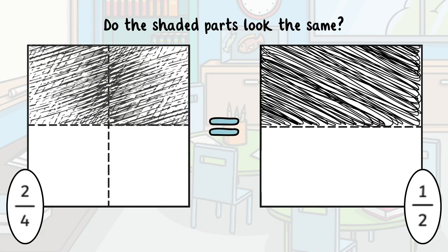Now, fold another paper into two equal parts and shade in one part. Do the shaded parts look the same? If yes, that means two-fourths equals one-half. They're equivalent.